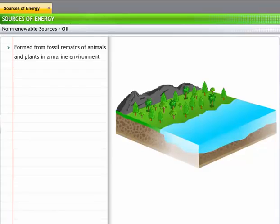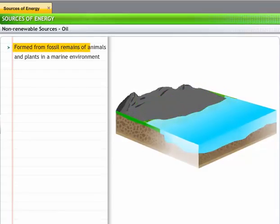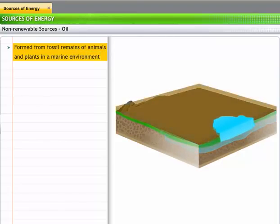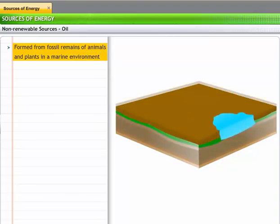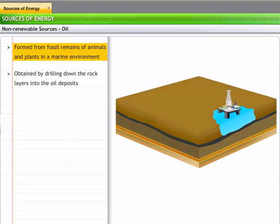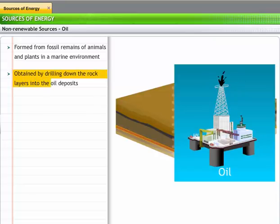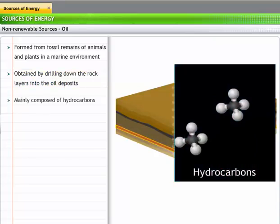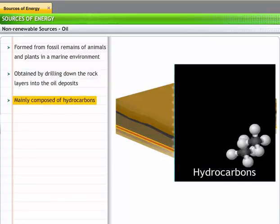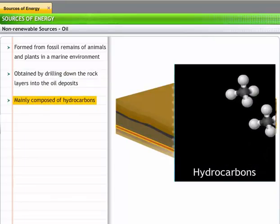Oil is formed from the fossil remains of animals and plants in a marine environment. These fossil remains turned into crude oil due to heat and pressure from the rocky layers above. We obtain oil by drilling down to the sources containing oil deposits. Crude oil is mainly composed of hydrocarbons that are a varying combination of carbon and hydrogen.